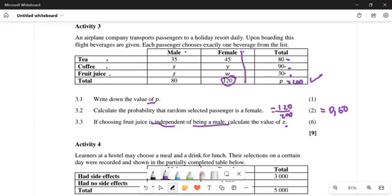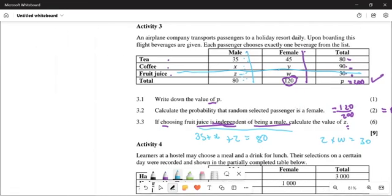We can either prove that things are independent or we can be told they're independent. So what are we told here? If choosing a fruit juice is independent of being a male, calculate the value of Z. What do we know about independent events?